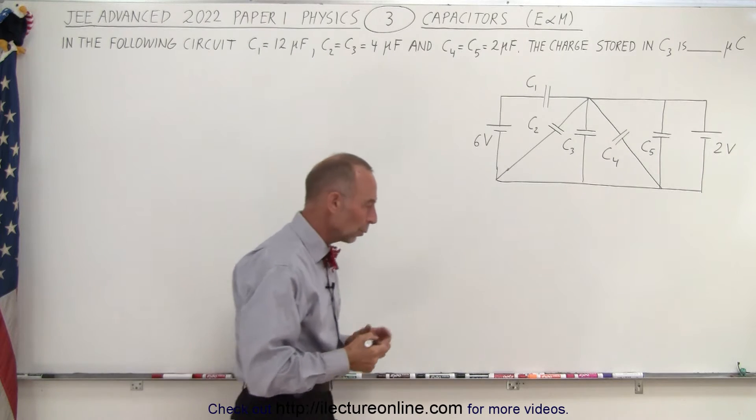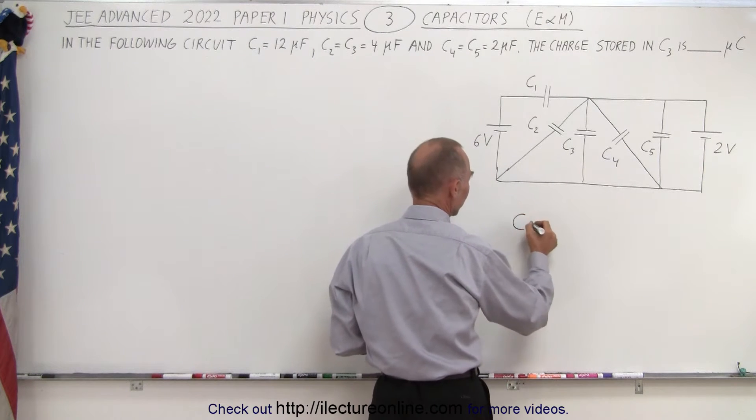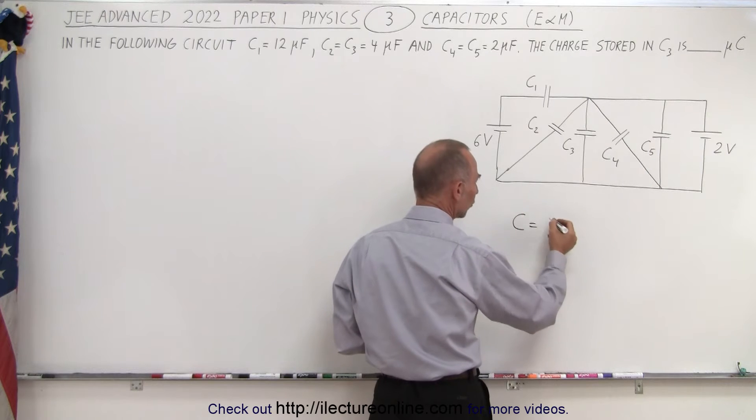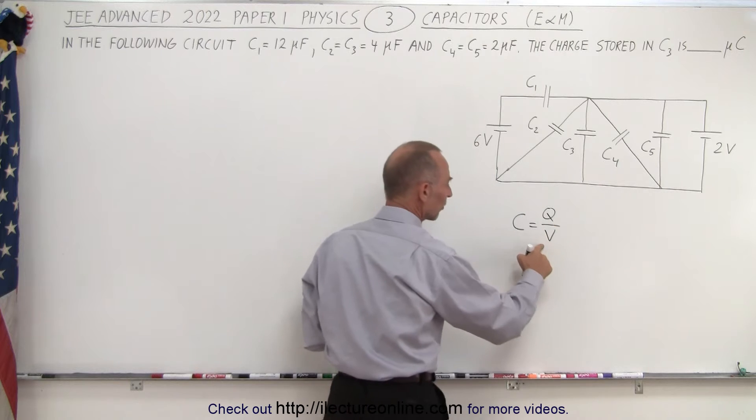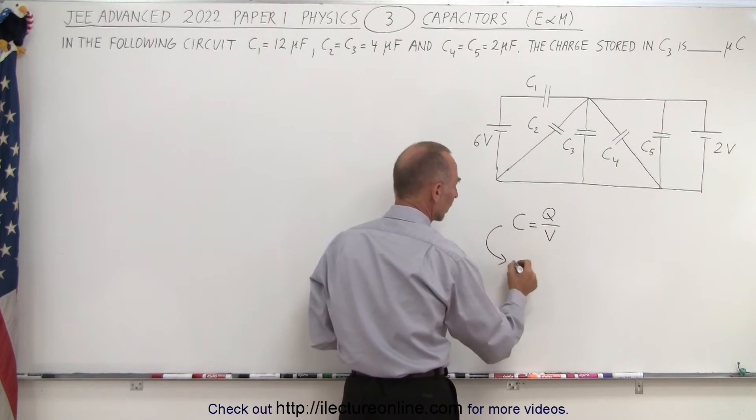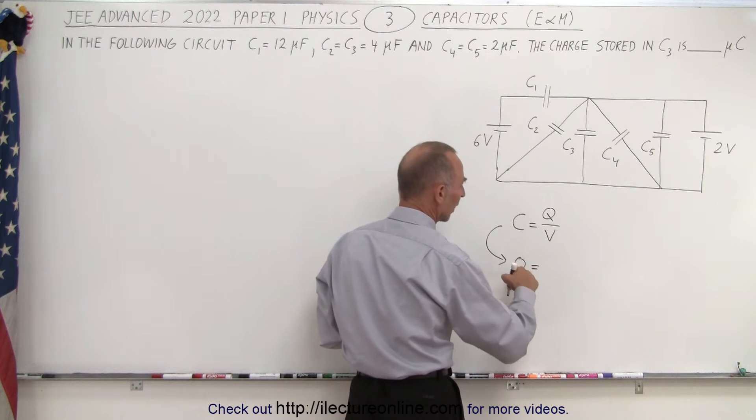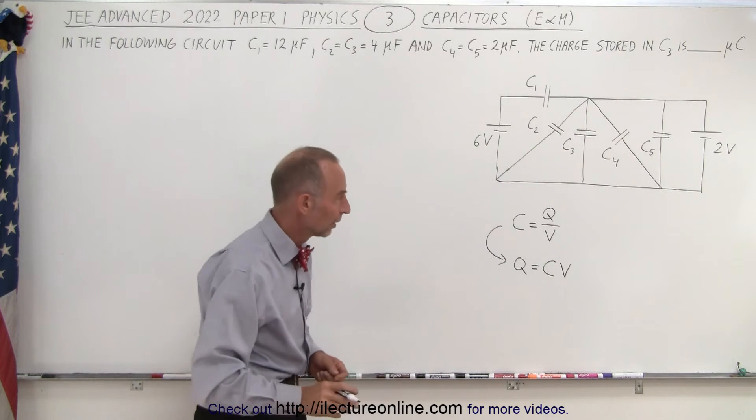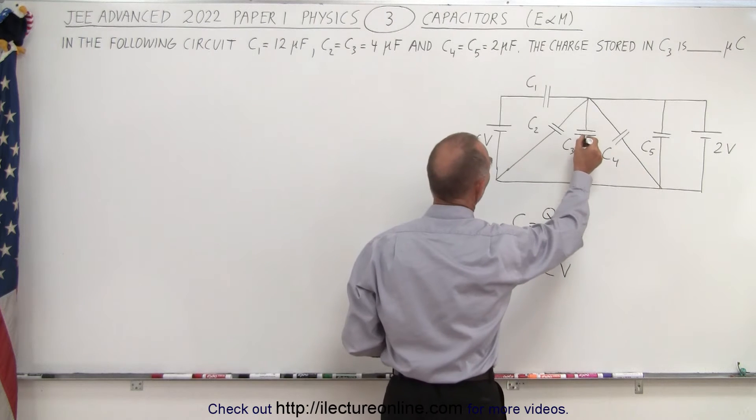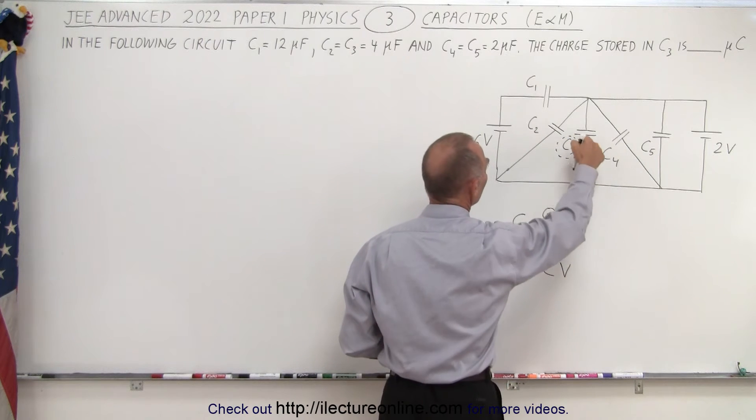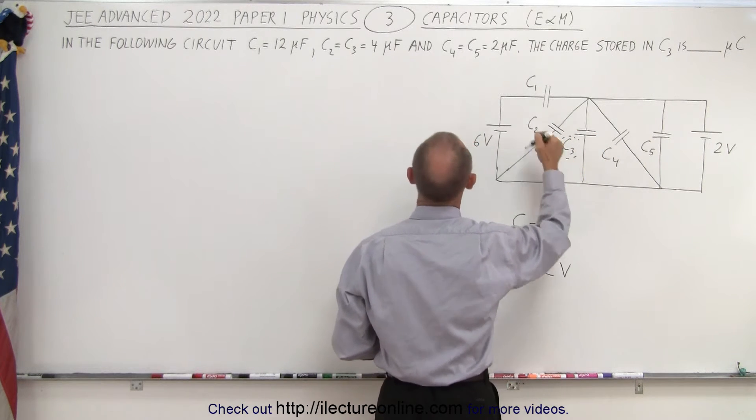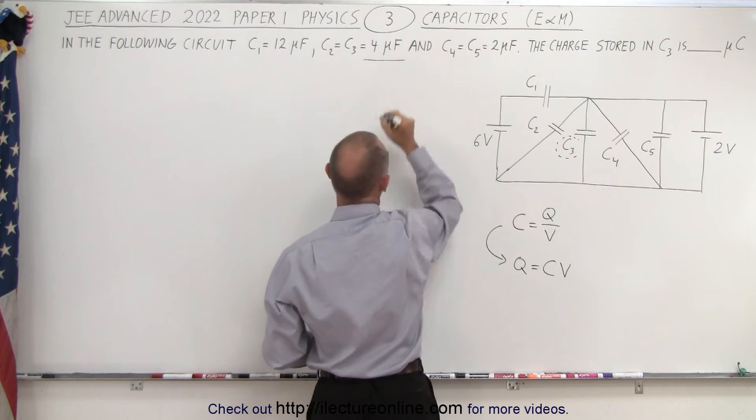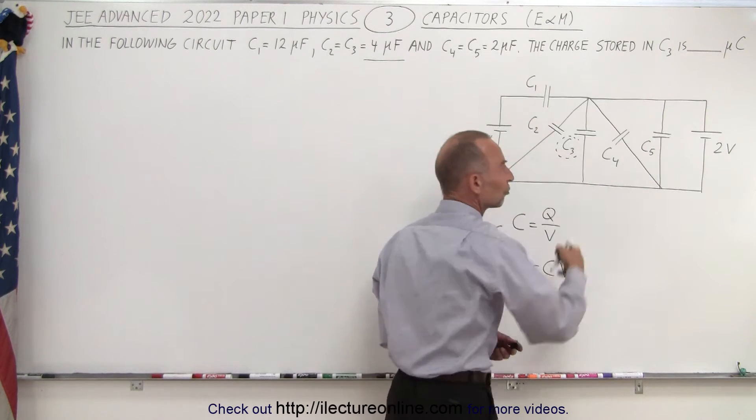We need to realize that by definition, the capacitance of a capacitor is equal to the ratio of the charge collected on the plates divided by the voltage across them, which means we can calculate the charge on the capacitor by simply multiplying the capacitance times the voltage across the capacitor. Since we're dealing with C3 here and we're given the capacitance of C3, it's right here, 4 microfarads, we now need to know the potential difference.